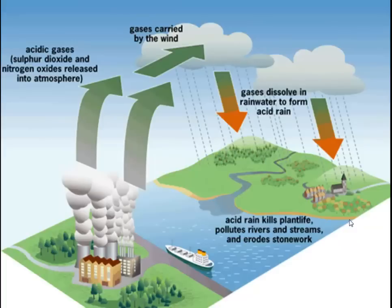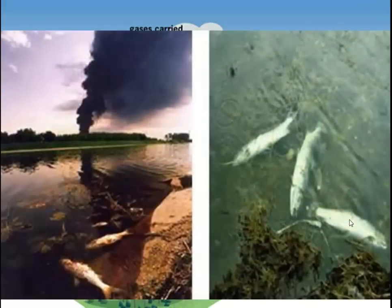Acid rain also pollutes rivers and streams. You can see this horrible pollution coming into these rivers and streams — it doesn't look very nice. We get dead fish, of course. It's acidic water and it kills the fish. The fish die — R.I.P. fish.